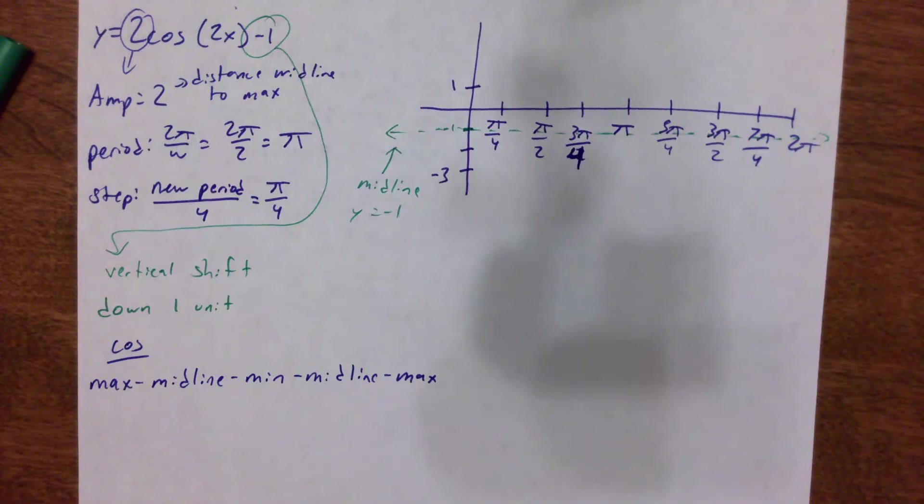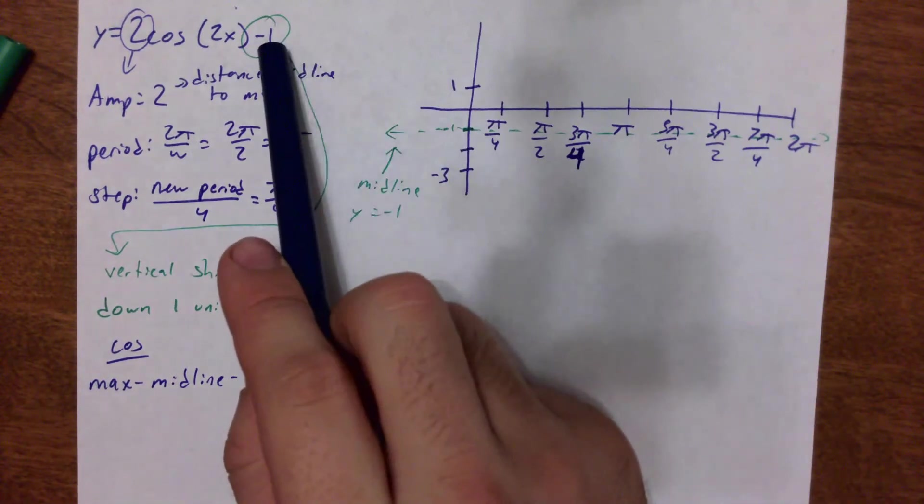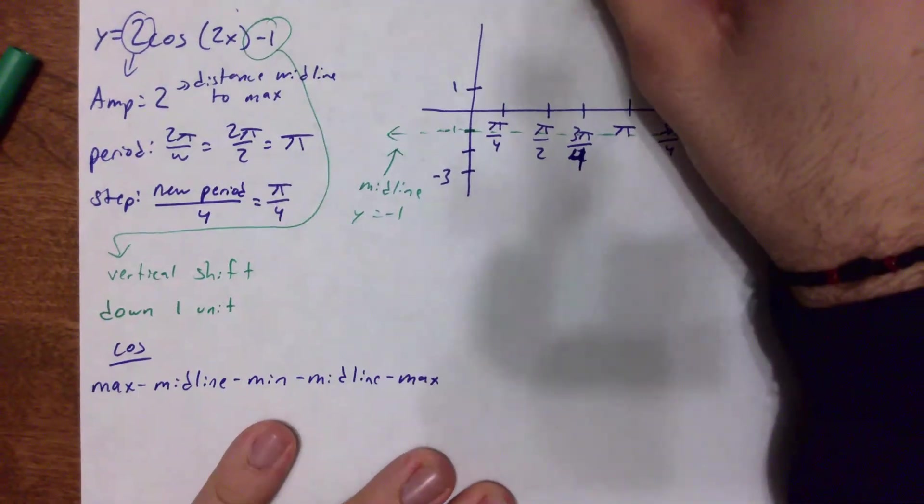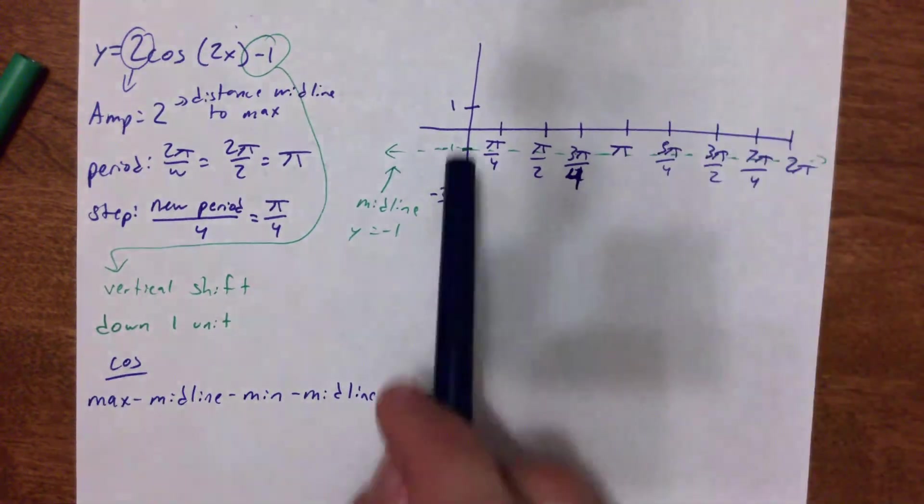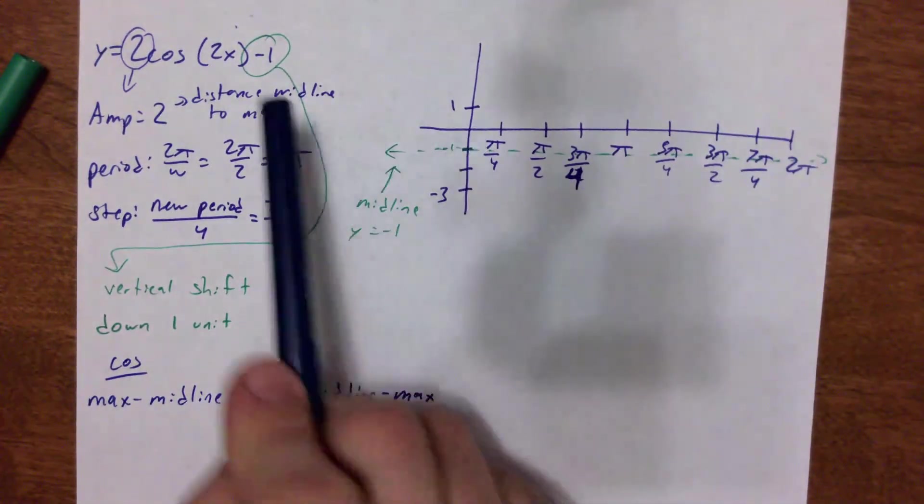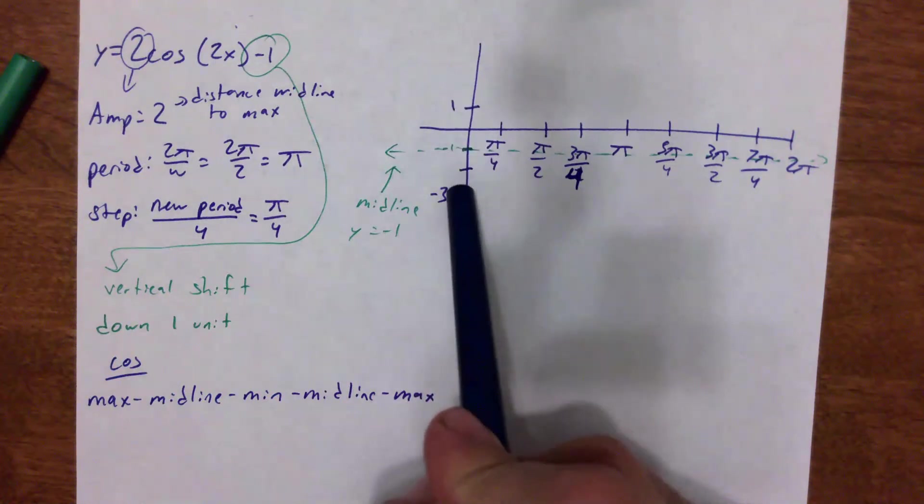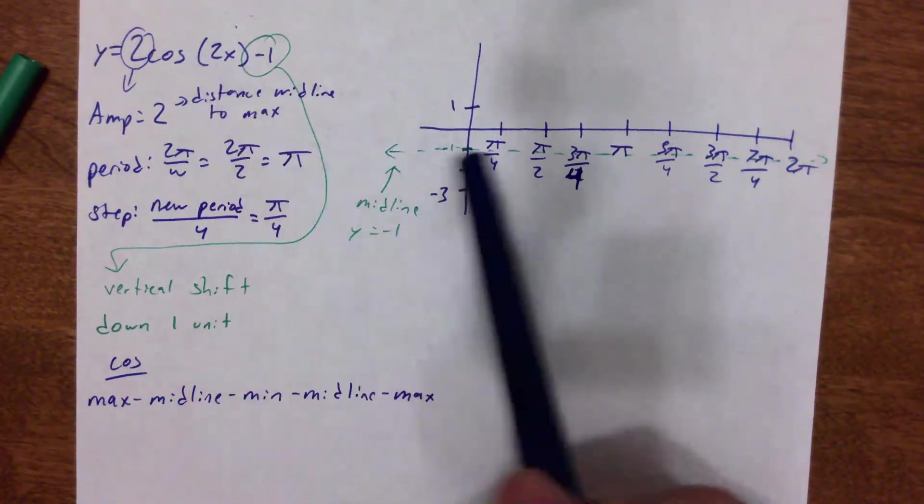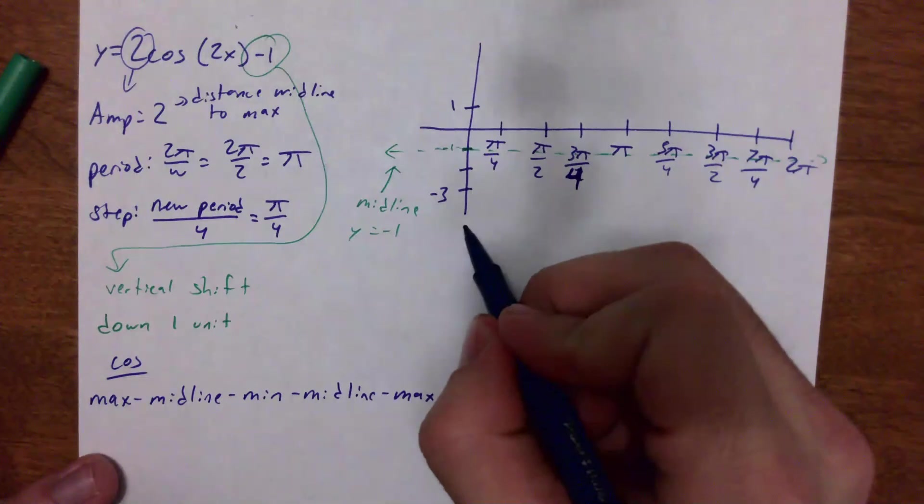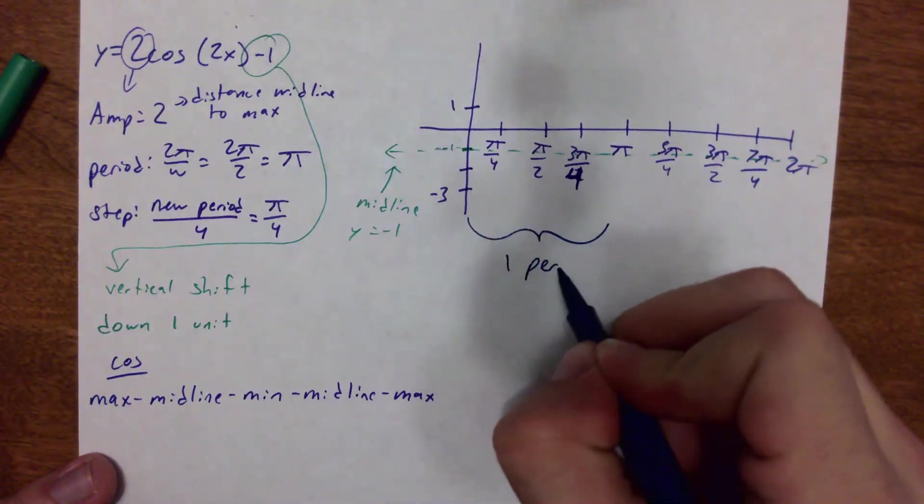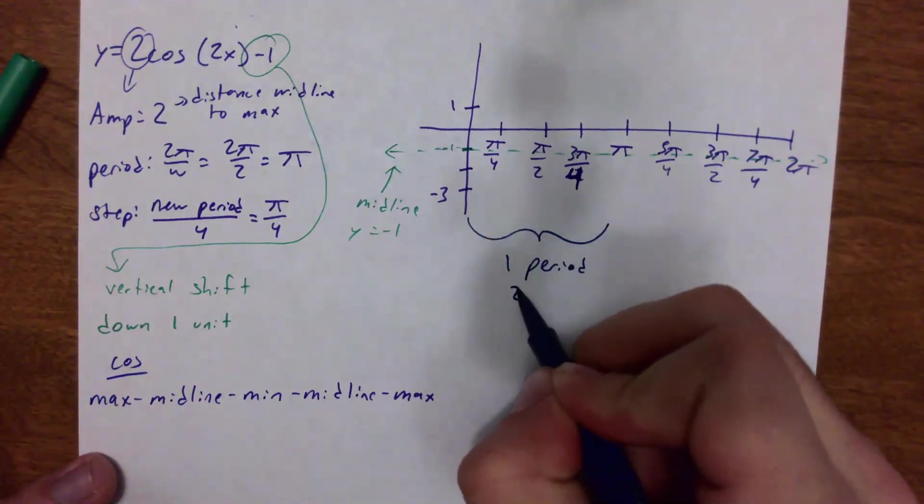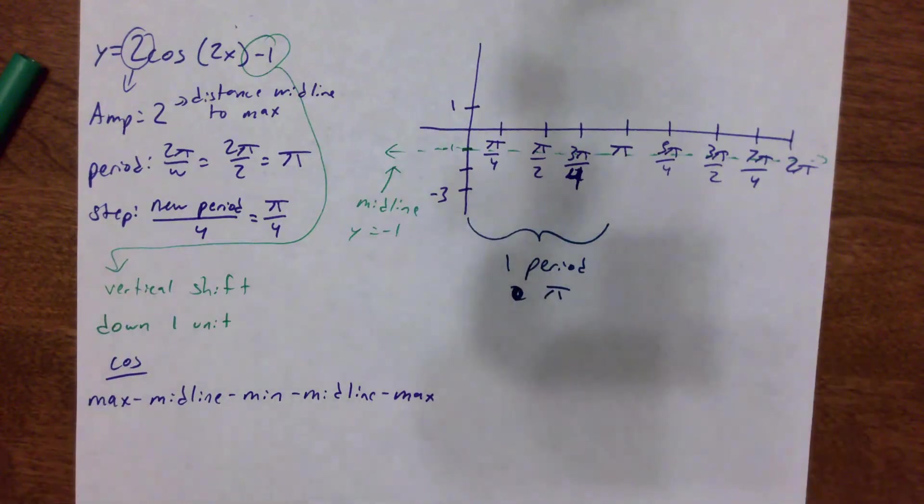So my midline, so this negative 1, this transformation deals with moving the midline. The 2 out in front deals with the amplitude change, which is how big my max and my min are. The 2 inside shrinks my period down. Again, this is going to be 1 period in π. And then the cosine is dealt with the pattern that followed: max, midline, min, midline, max.